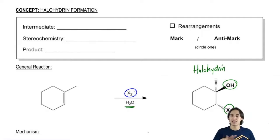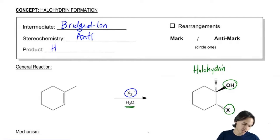Let's talk about the mechanism. The intermediate is once again going to be a bridged ion, just like before. The stereochemistry is going to be anti, just like before, because any time you're opening up a three-membered ring, you're going to get anti products. And my product is going to be a halohydrin.